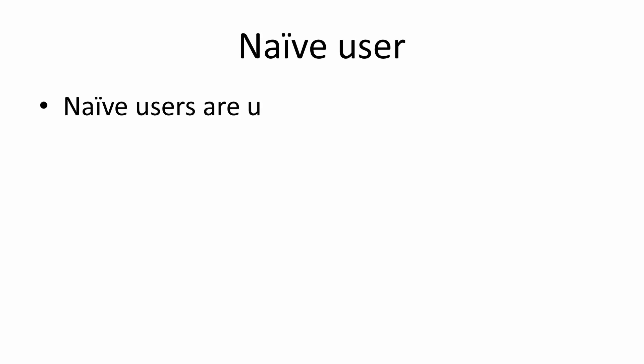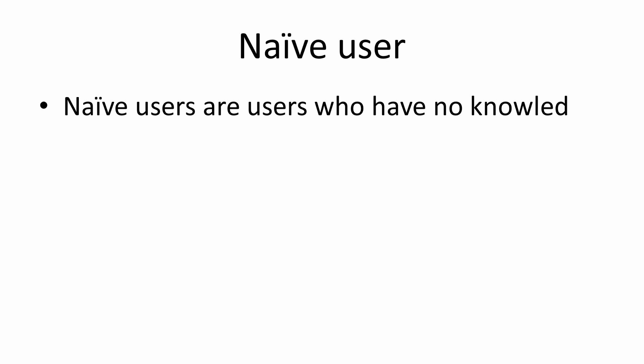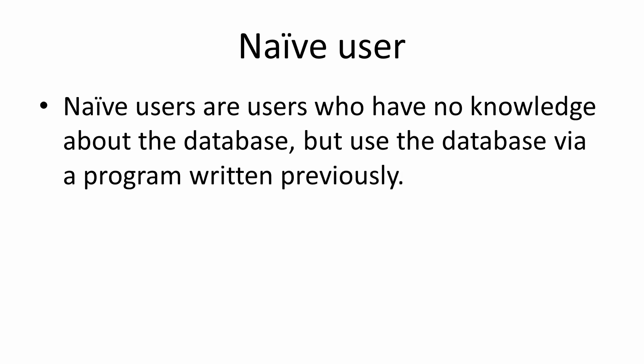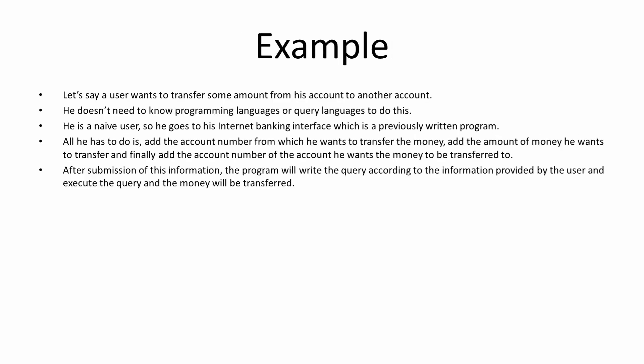The first type is naive users. Naive users are users who have no knowledge about the database, but use the database via a program written previously. They don't know how the database works, where it is stored, or anything about it. They don't write any new code or queries — they just work with a program that was written previously.